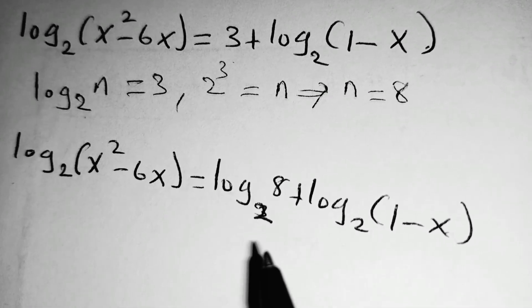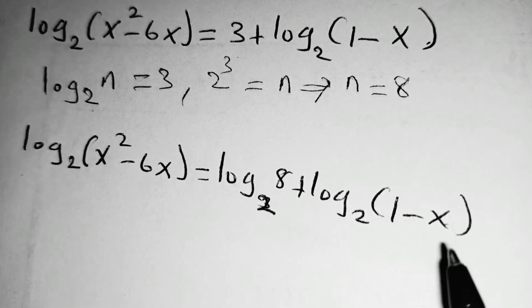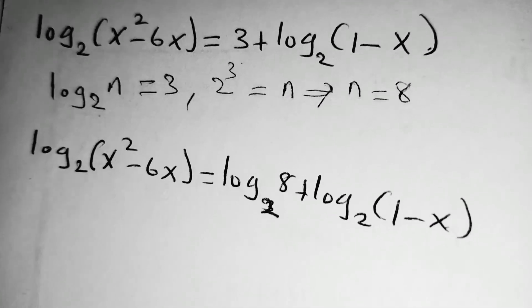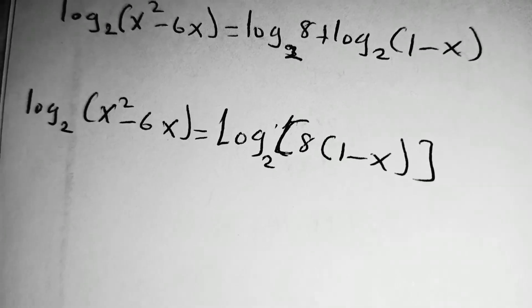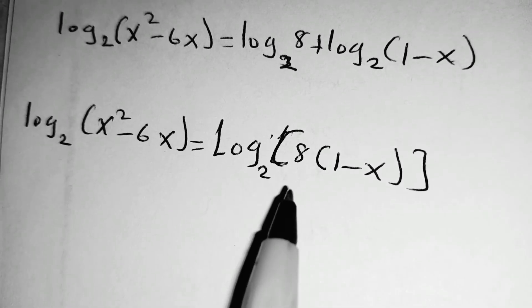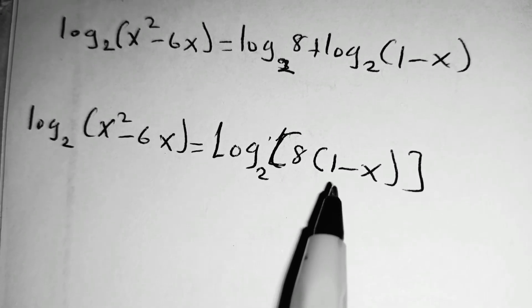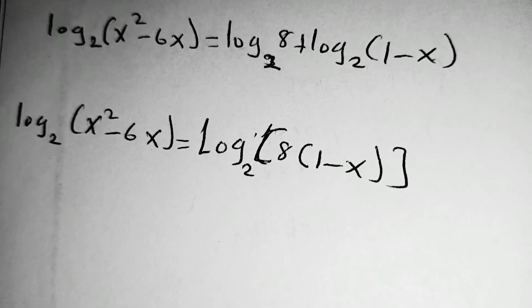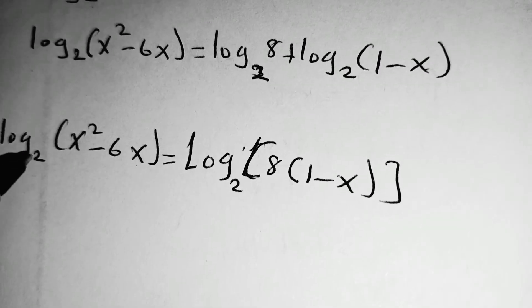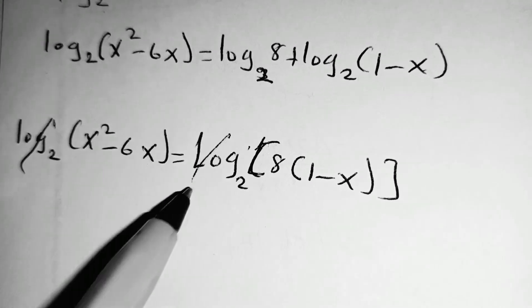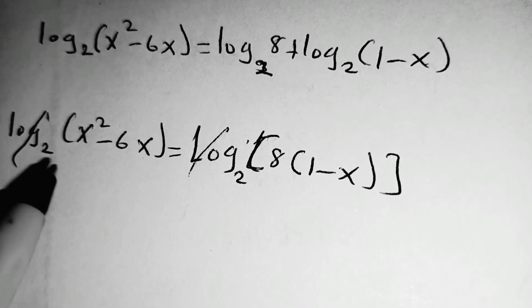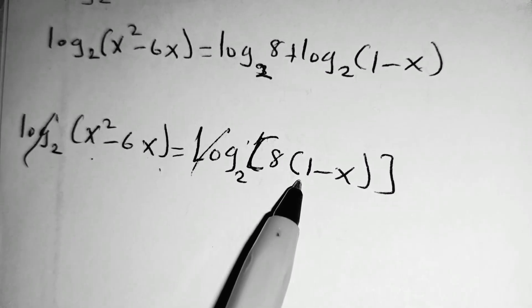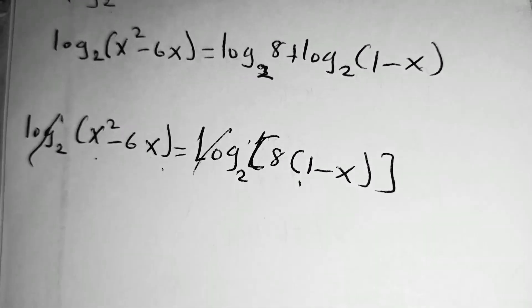Then we use the laws of logarithm, which tells you that when you are adding logarithm, you can factor logarithm out and you multiply the values. So this is the same as log of 8 multiplied by 1 minus x, everything to base 2. At this level, we can cancel log to base 2, both sides. So that we shall now equate x squared minus 6x is equal to 8 minus 8x.